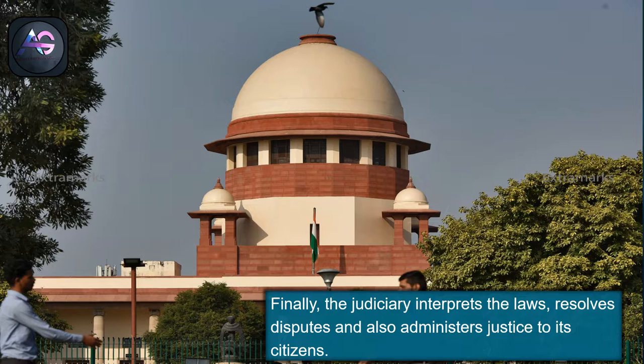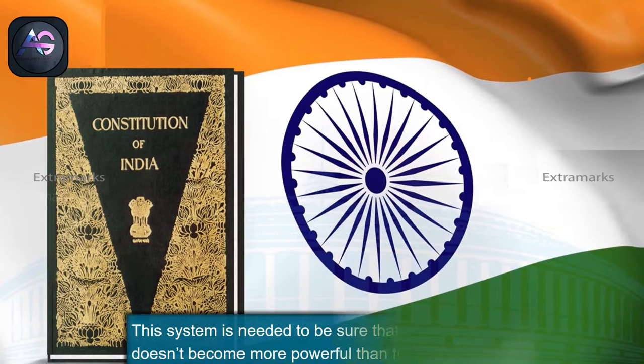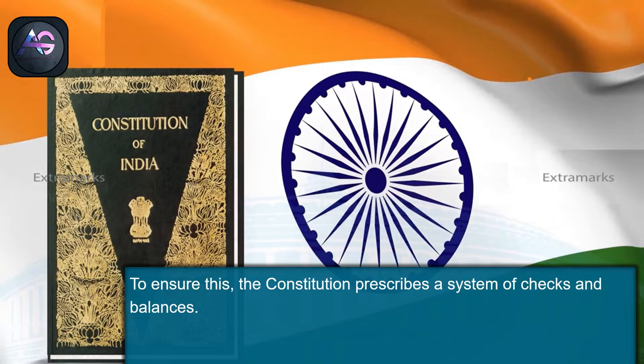Now that we have discussed the role of each wing of the government, let us discuss the system of checks and balances in the Indian government. This system is needed to ensure that one branch of the government doesn't become more powerful than the others, and the Constitution prescribes measures to maintain this balance of power.